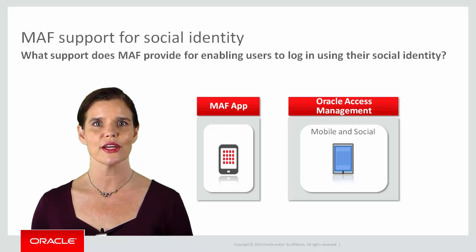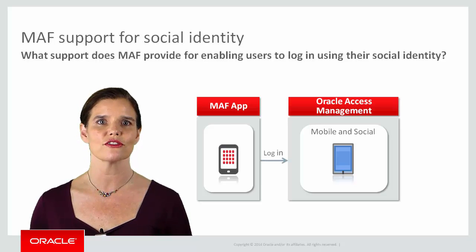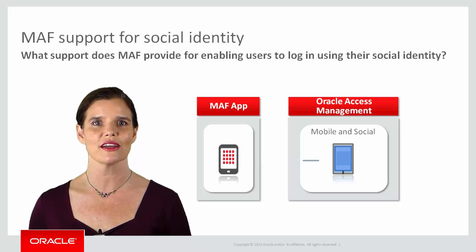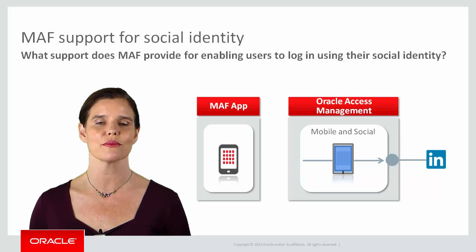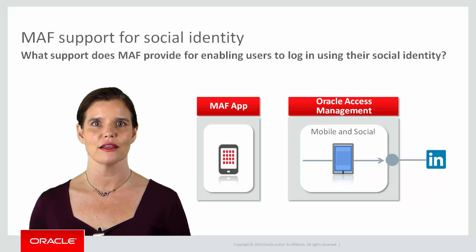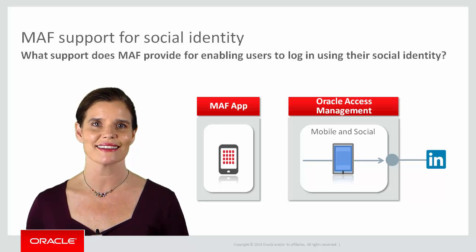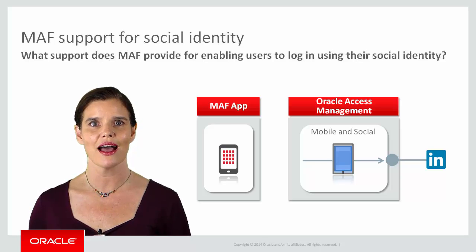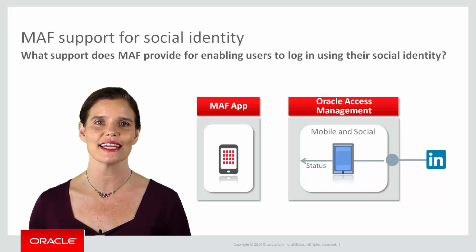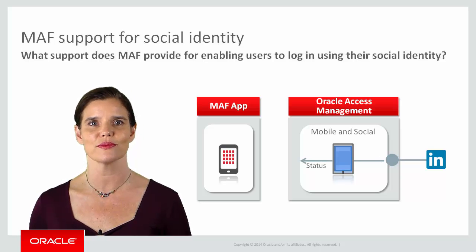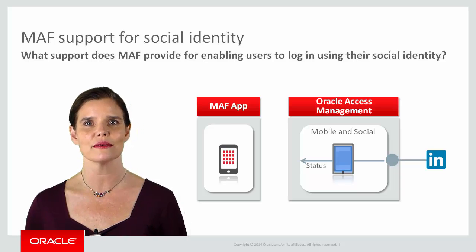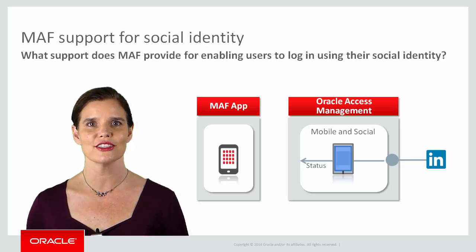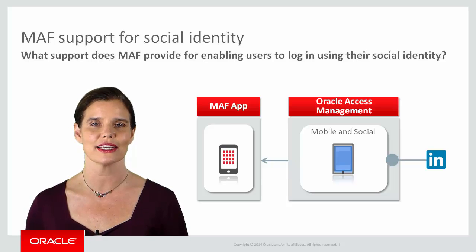In this scenario, when the user logs in, Access Manager forwards the user's login request to Mobile and Social, which completes the authentication process with the identity provider in the background. Mobile and Social, the relying party, redirects the user to Access Manager. At the same time, Mobile and Social provides Access Manager with the user's authentication status and user attributes, which were sent by the identity provider, and the authenticated user is allowed to access the protected resource.